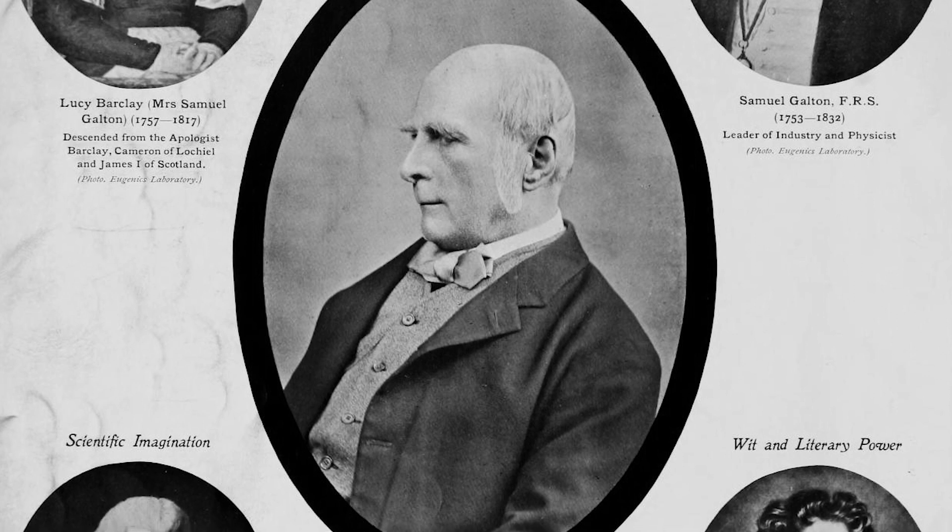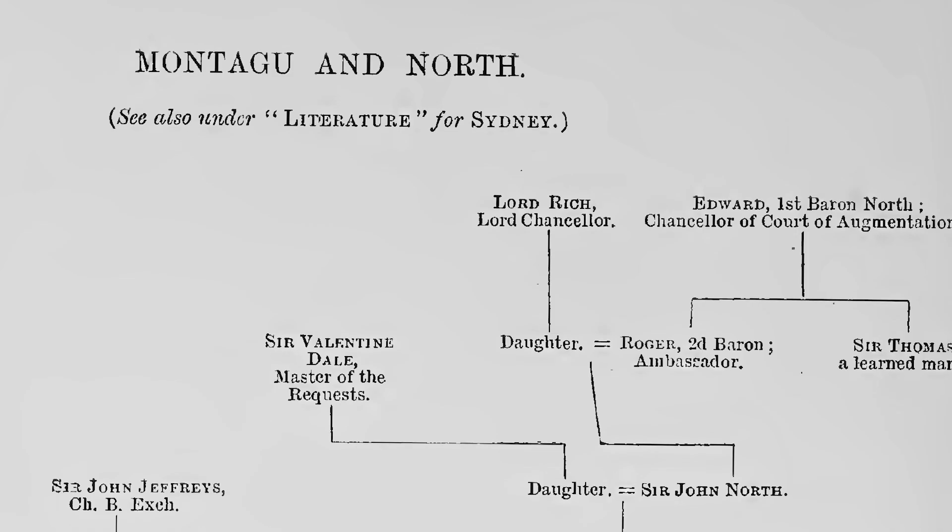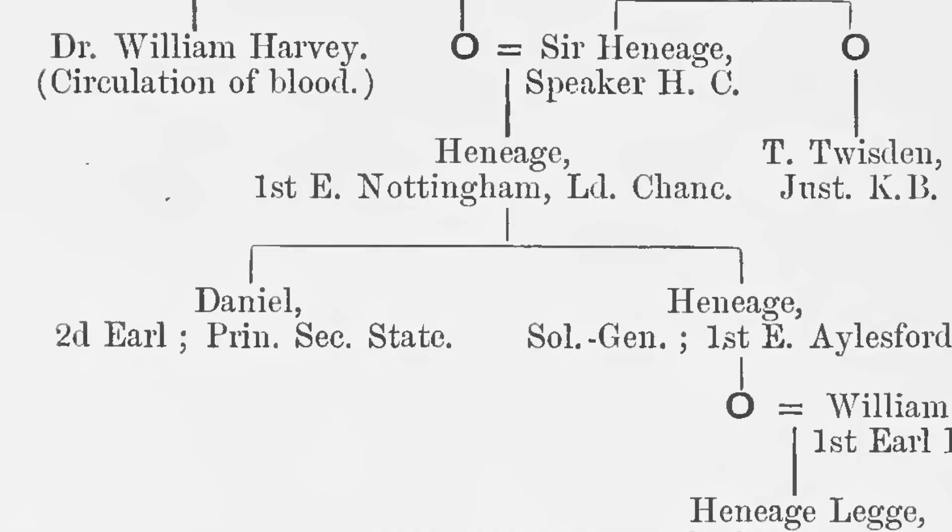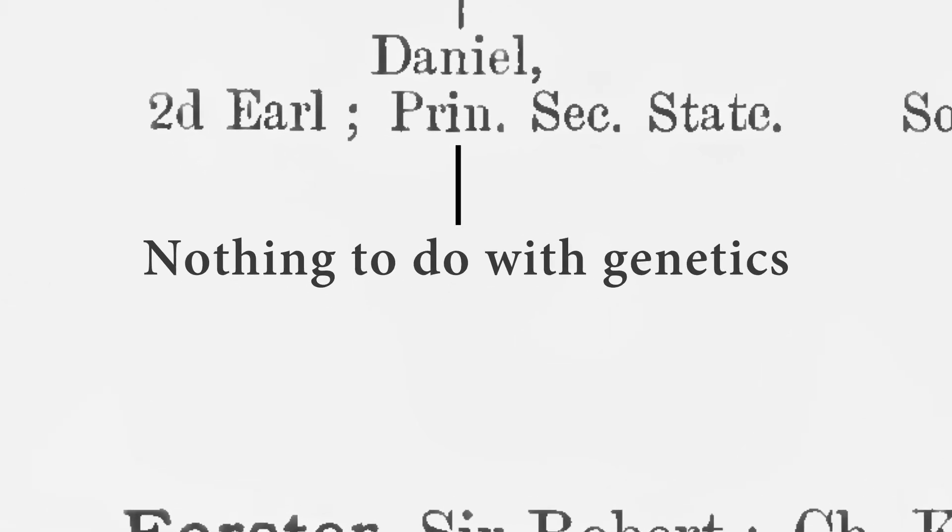Although Galton discovered regression to the mean through his work on heredity, it actually has nothing to do with genetics. Regression to the mean is purely a statistical phenomenon. It's not due to any genetic process — it's just the fact that there's randomness in how tall you end up being that tends to mean the children of very tall people will end up slightly closer to the mean. It's a purely statistical process, nothing in our genetics.